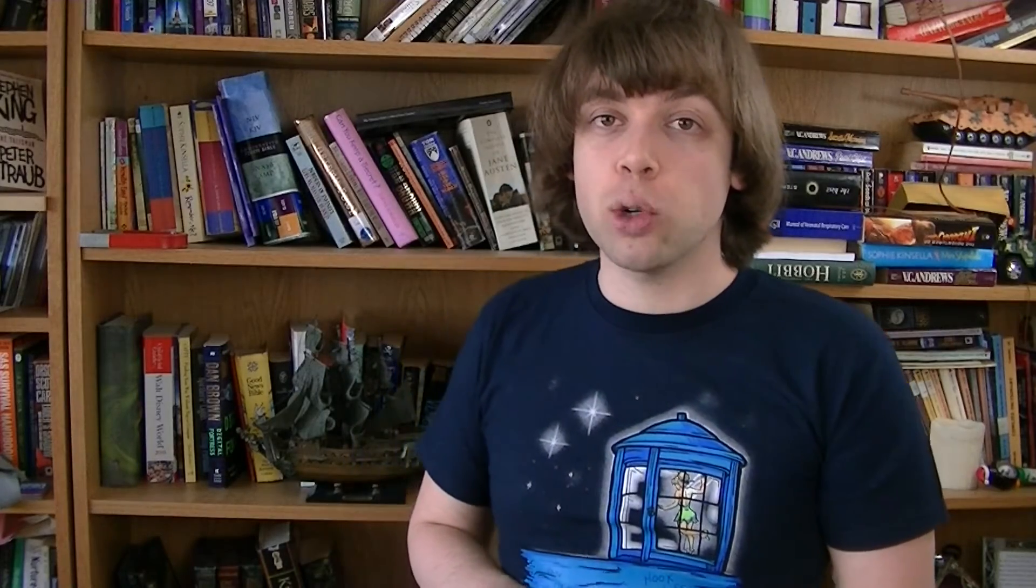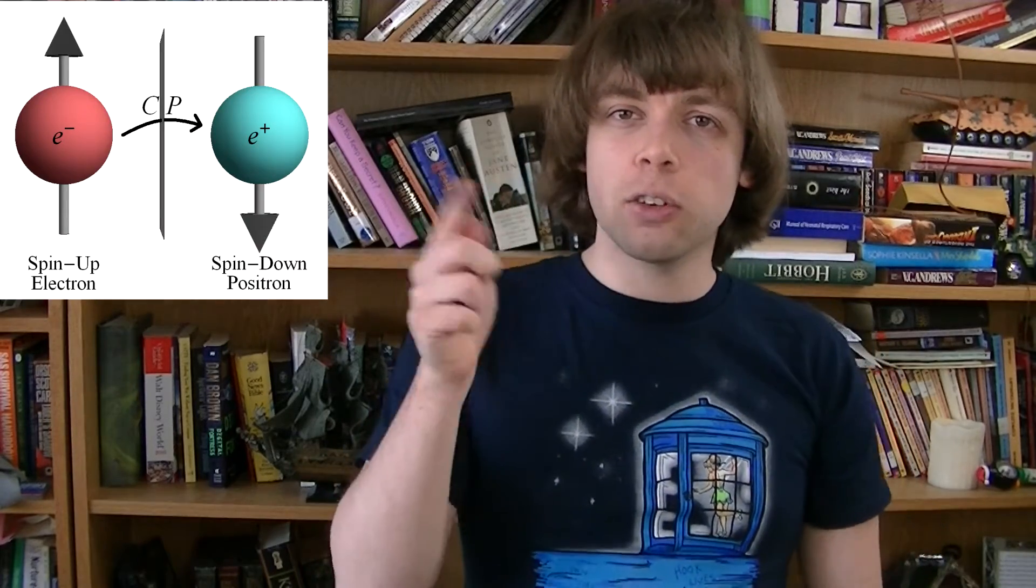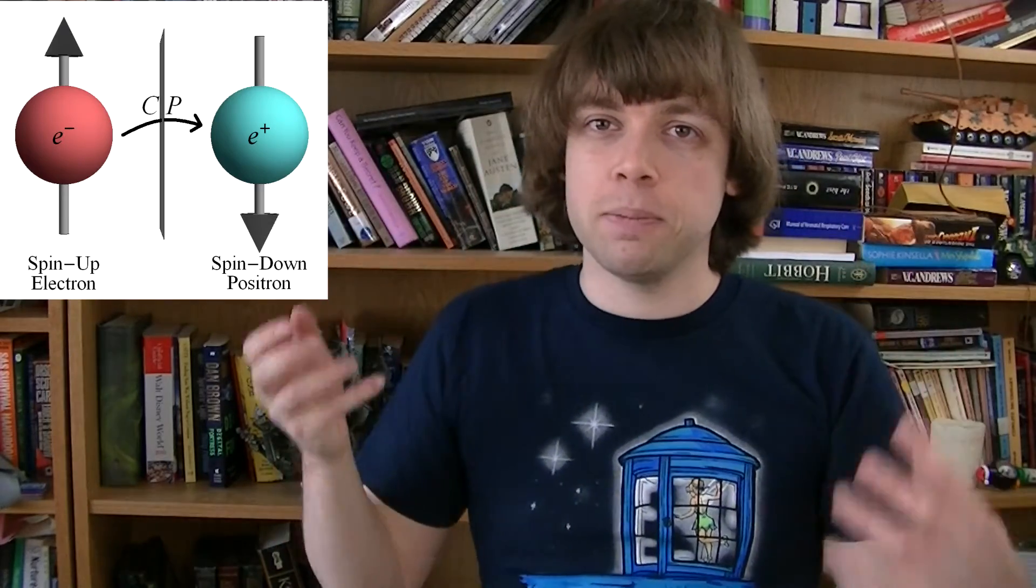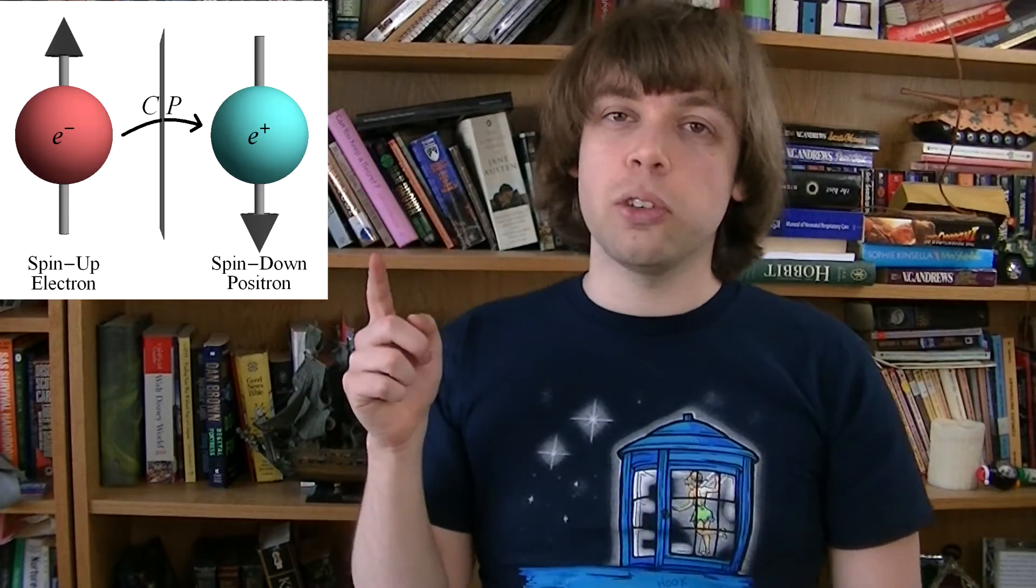There's another property, a quantum mechanical property, that electrons have called spin. You can think of it as the electrons spinning one way rather than the other. That's not accurate, but it's just a way to imagine it. And you can say that spinning electrons produce a magnetic field.